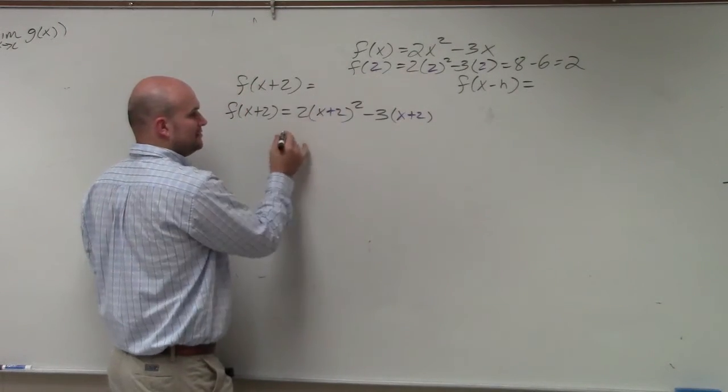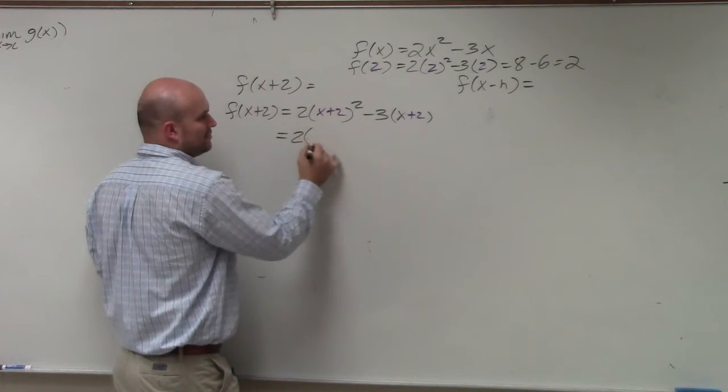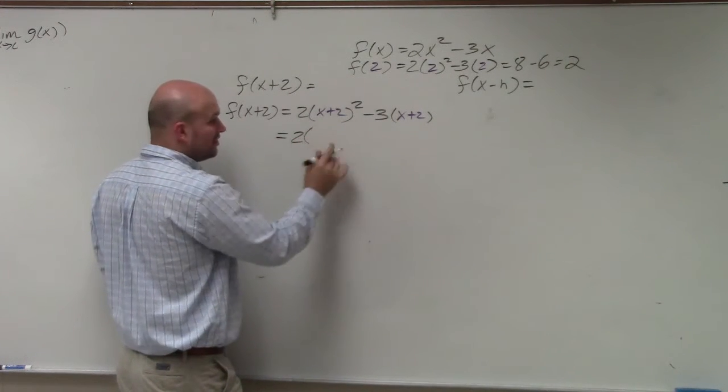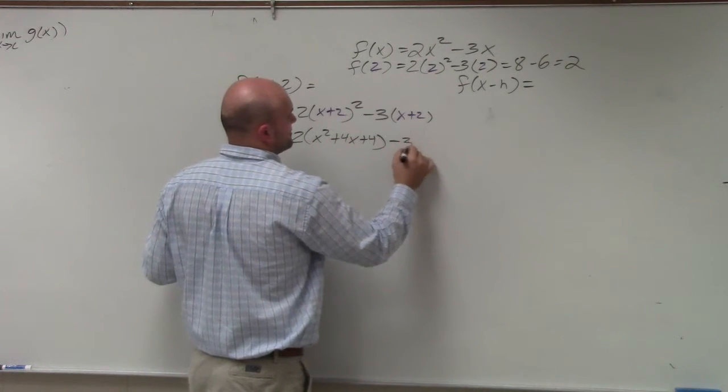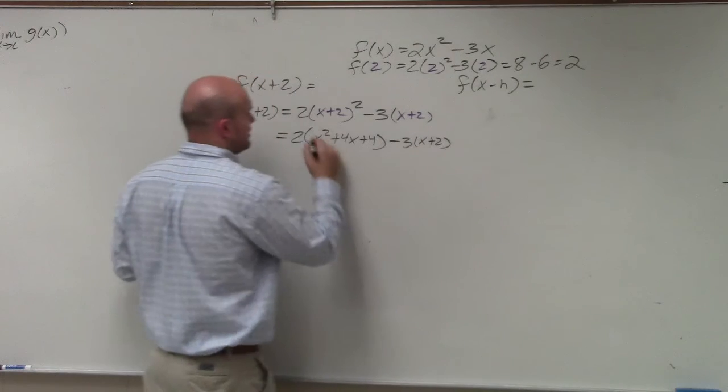This is a binomial squared. You guys should know how to multiply a binomial squared. You don't need to do FOIL or all the crazy stuff. x squared plus 4x plus 4 minus 3 times x plus 2.